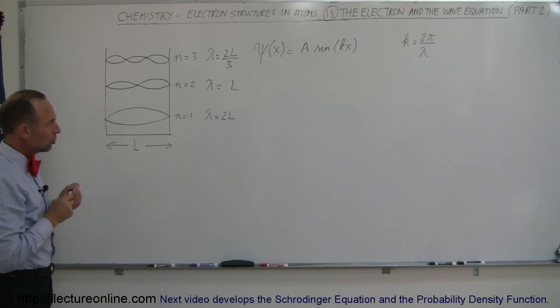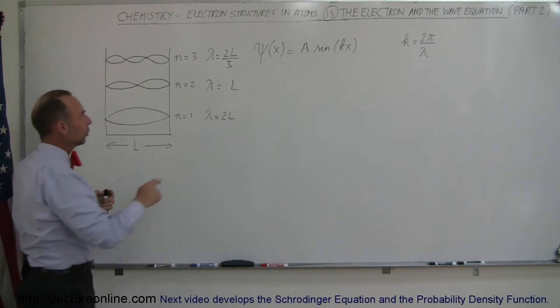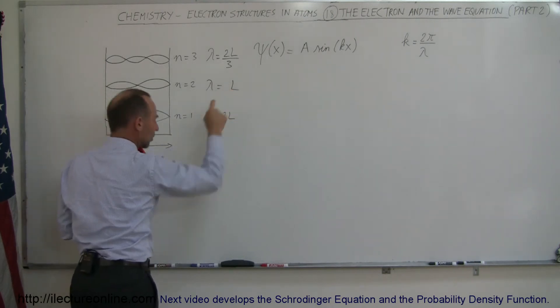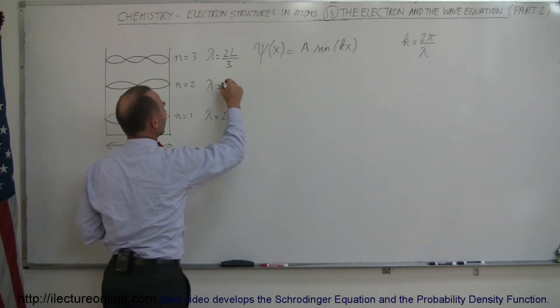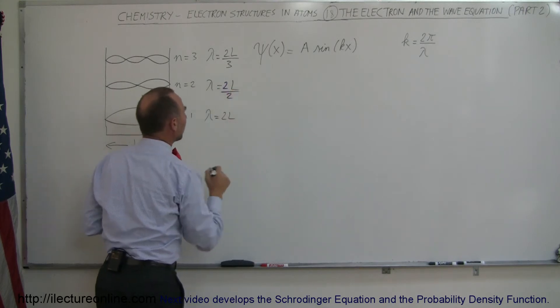Now, what I could do is I could go ahead and put a 2 here and put a 2 in the denominator. So I'm going to make a small adjustment, put the 2 here and put the 2 there. Now, and then I'm going to go ahead and put a 1 over here.